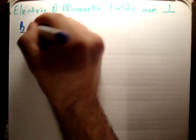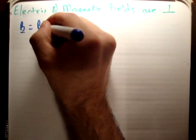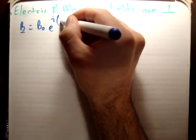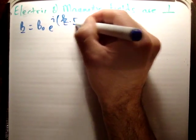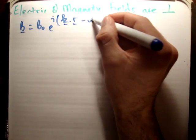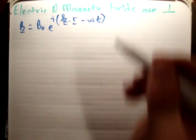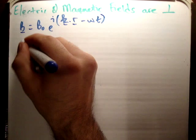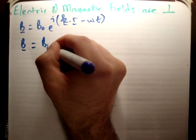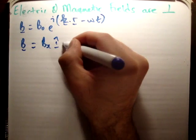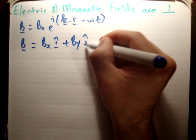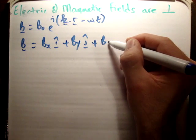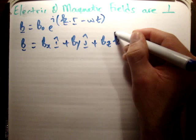Now we'll continue on to look at the magnetic fields. I'll define the magnetic field vector as the initial amplitude B₀ times the complex exponential of the wave number dot product with the displacement vector minus ωt. This is equal to B_x in the i-hat direction, plus B_y in the j-hat direction, plus B_z in the k-hat direction.